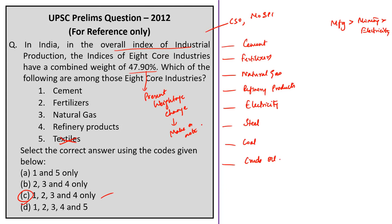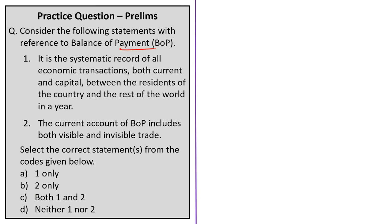Consider the following statements with reference to balance of payment: Statement 1 says it is the systematic record of all economic transactions, both current and capital, between the residents of the country and the rest of the world in a year. Statement 2 says the current account of balance of payment includes both visible and invisible trade. Both statements are correct. Therefore, option C — both 1 and 2 — is the correct answer.